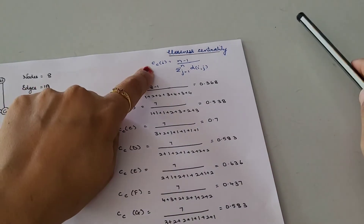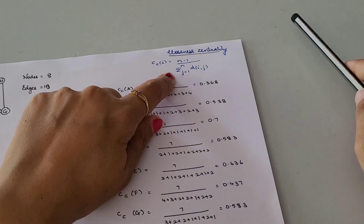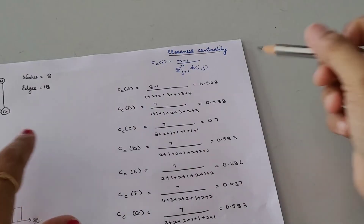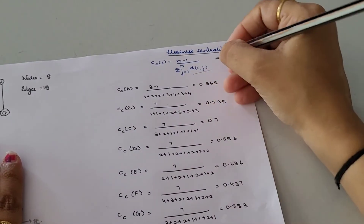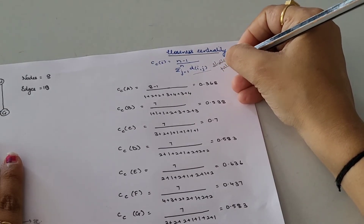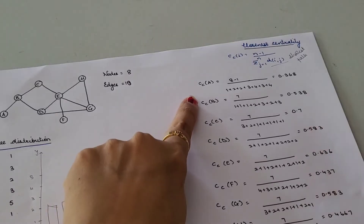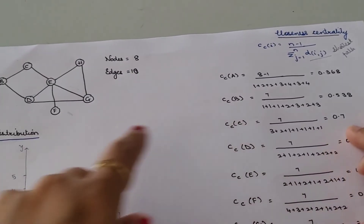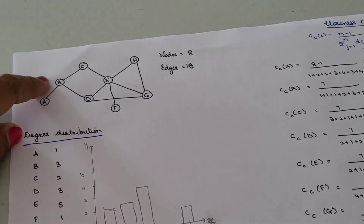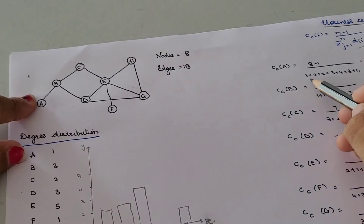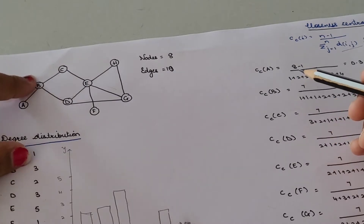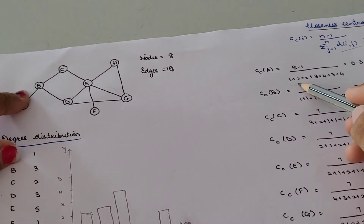Based on degree distribution we calculated degree centrality. Similarly we will be calculating closeness centrality. The formula is: CC(i) = (n - 1) / summation of d(i,z) where z runs from 1 to n, and d(i,z) represents the shortest path to that node. For node A, check the shortest path from each node: from B you have only one edge, so we write 1. From node C, the path is C to B to A — that is 2 edges.